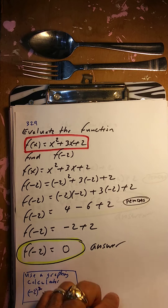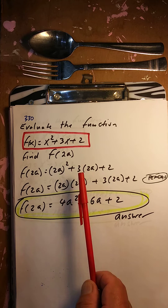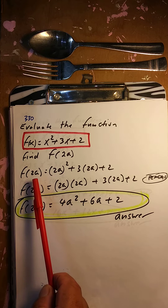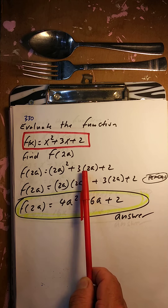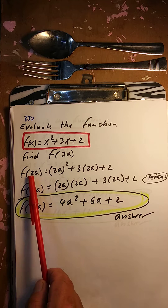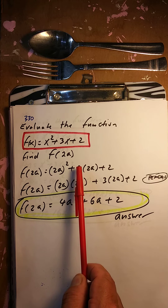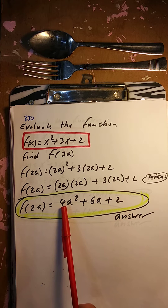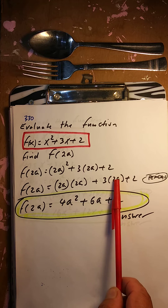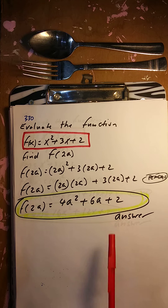Evaluate the function, find f of 2a. For the x's we're going to put 2a in each place. So 2a squared means 2a times 2a, which is 4a squared. And 3 times 2a is 6a, plus 2. That's it — we're done: 4a squared plus 6a plus 2.